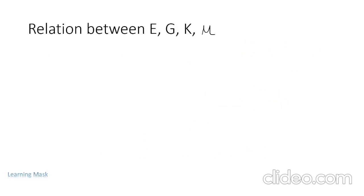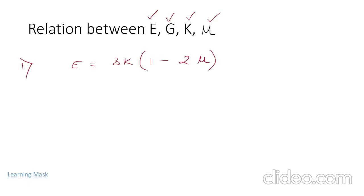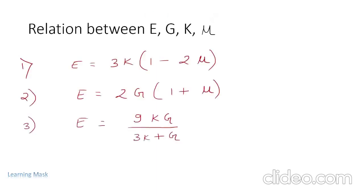Now we will learn about the relations between elastic constants — that is, modulus of elasticity, modulus of rigidity, bulk modulus, and Poisson's ratio. These are the required relations between them.